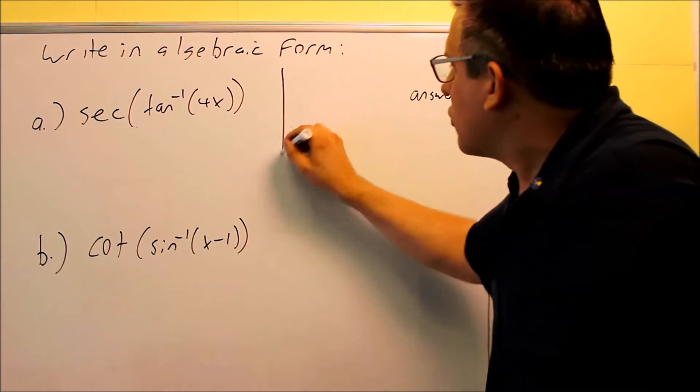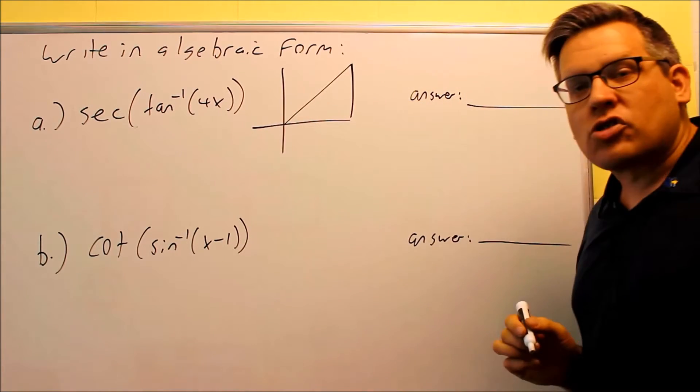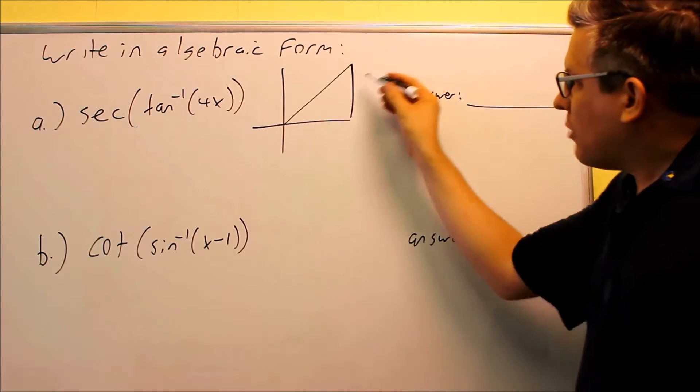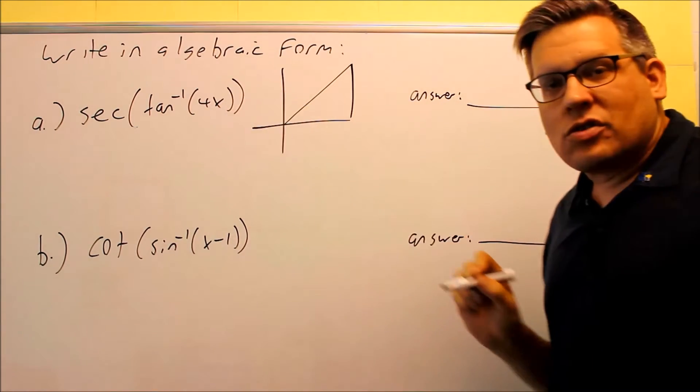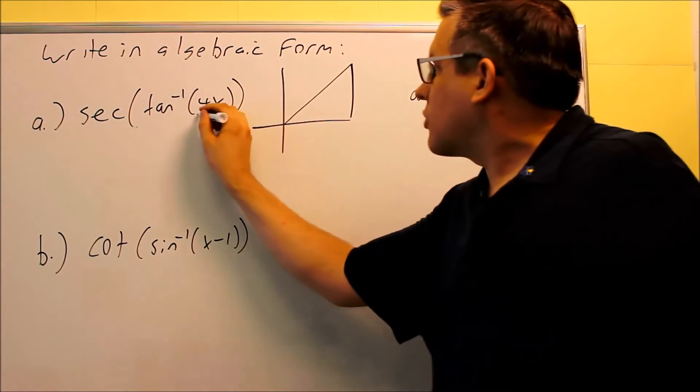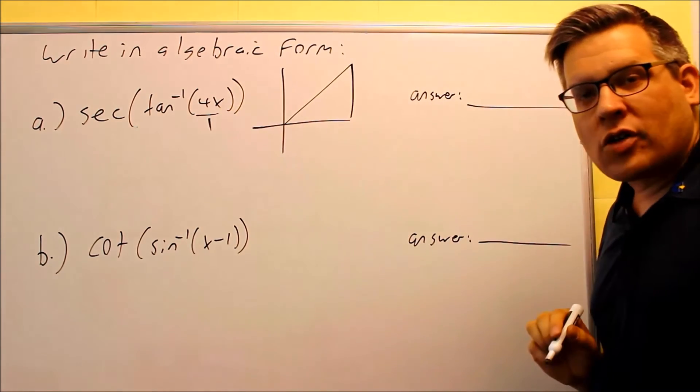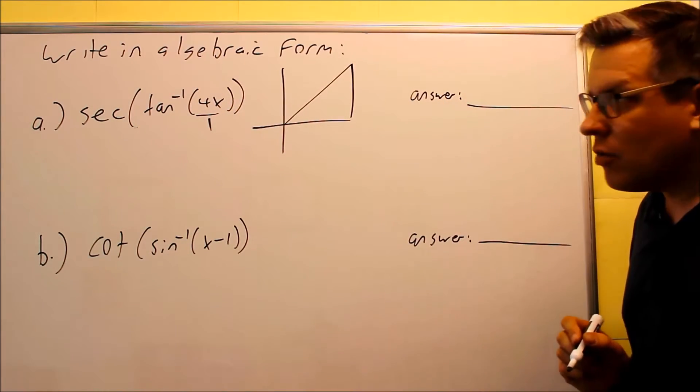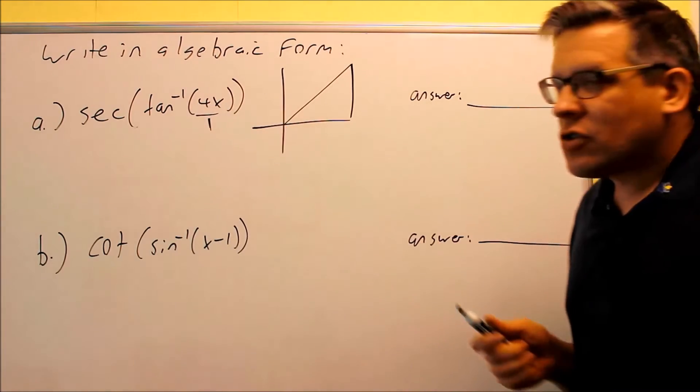So let's do that for this one. We're going to draw this in the first quadrant, and we want to label the sides based on what they give us here. Now, because they give us 4x, we want to write that as 4x over 1, so that way we can get two sides on our triangle.